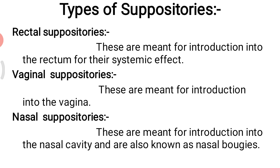They are either cone or torpedo shape. Rectal suppositories are administered into the rectum for their systemic effect. They are generally made from theobroma oil and are available in sizes for different patients — about two grams — in either cone shape or torpedo shape. These are rectal suppositories.